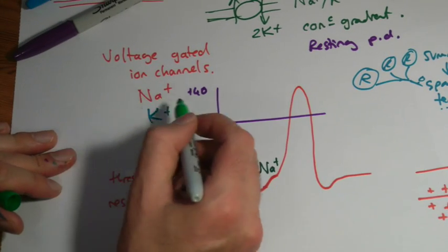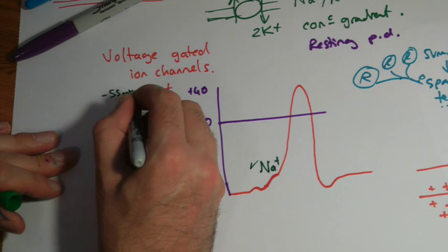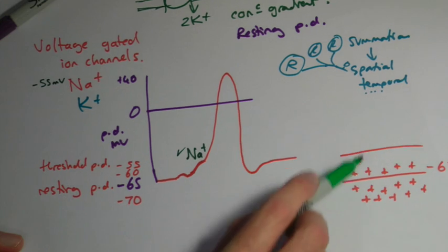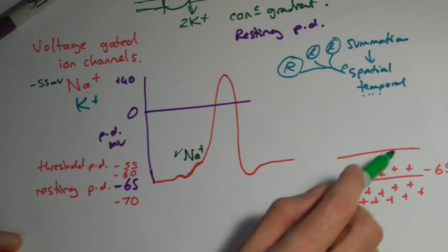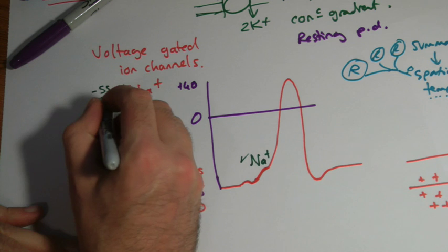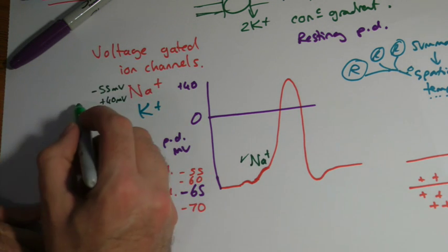So we could say our voltage-gated sodium channels come on at about minus fifty-five millivolts. All these sodiums come rushing in through diffusion through these open channels. They can get through the membrane now until it hits about plus forty. And at plus forty millivolts, those channels basically shut off.